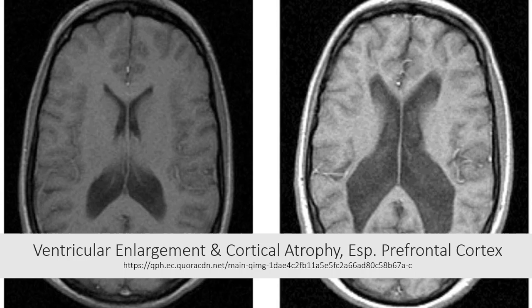The temporal lobe is primarily responsible for processing sensory information and forming memories, as it houses the hippocampus. The parietal lobe is primarily responsible for integrating sensory information such as touch, temperature, pressure, pain, etc.